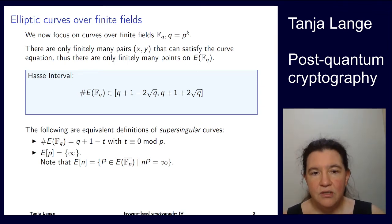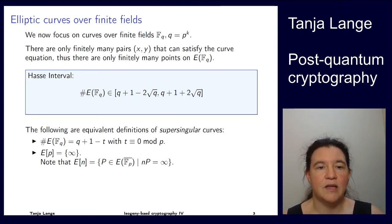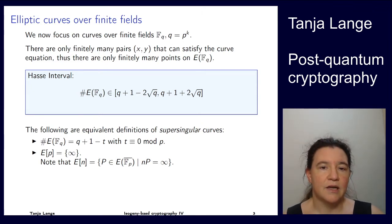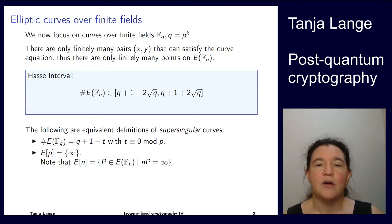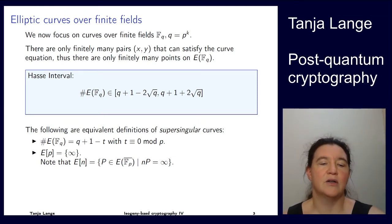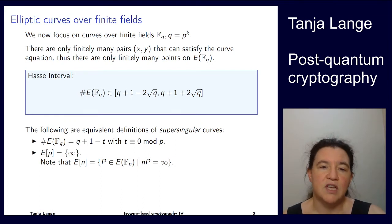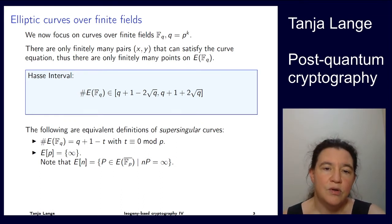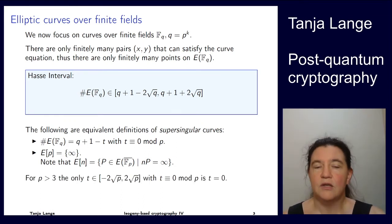There is a third equivalent definition: the endomorphism ring is an order in a quaternion algebra. We're not going to do much with that, but what can we say about the number of points if you're looking over a sufficiently large field?